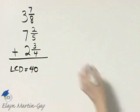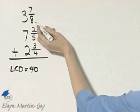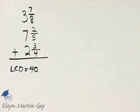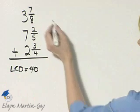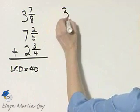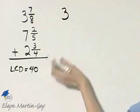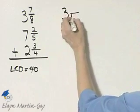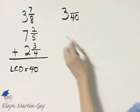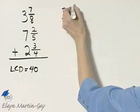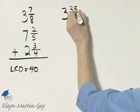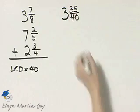So let's go through now and rewrite each mixed number so that the fraction part has a denominator of 40. I have 3 and 7 eighths. 8 times what number gives me 40? Well, 8 times 5 gives me 40. Remember that 5 because we'll now multiply 7 times 5 and that's 35. Let's continue.